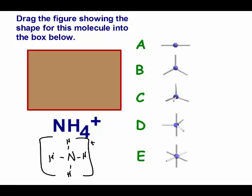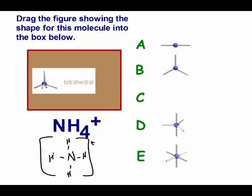For the next problem, there are four atoms coming off and no lone pairs. The charge doesn't affect the shape. With four atoms and no lone pairs, the shape is tetrahedral.